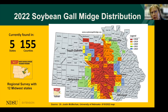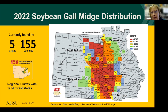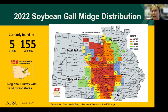Current distribution is five or six states across 150 counties, and it continues to expand each year. There is a regional multi-state survey ongoing in 12 Midwestern states that North Dakota is participating in.